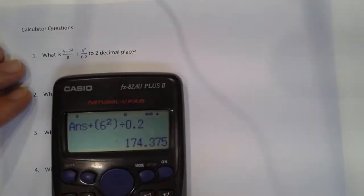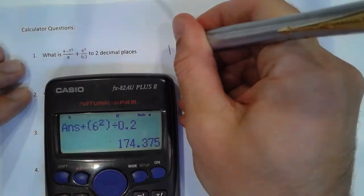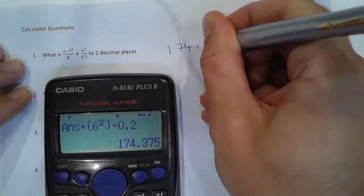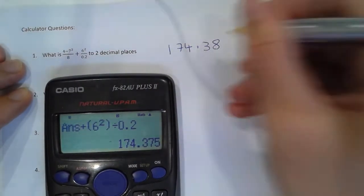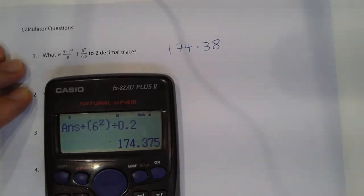Now because it wants it to two decimal places, that makes it 174.38, because the 5 rounds it up. Next question.